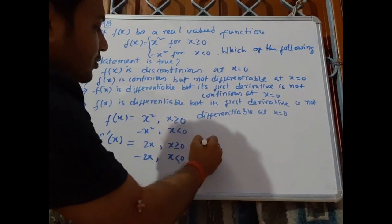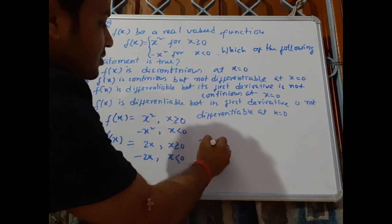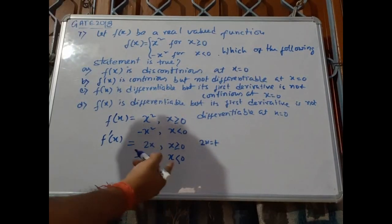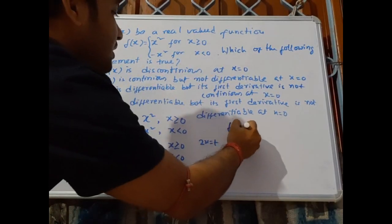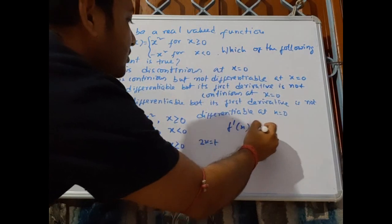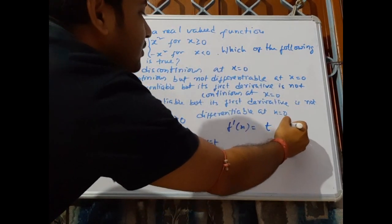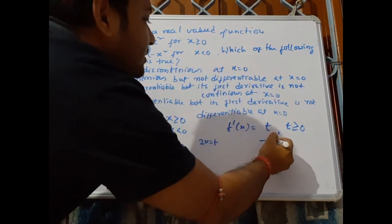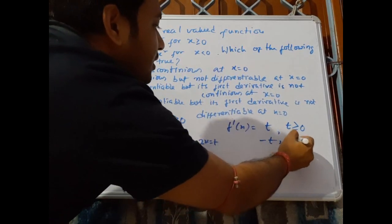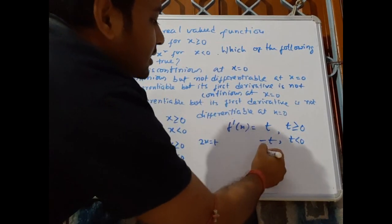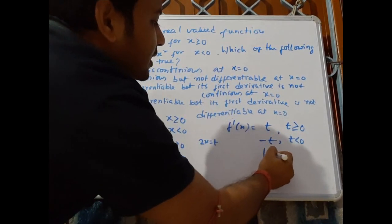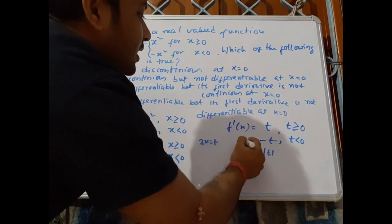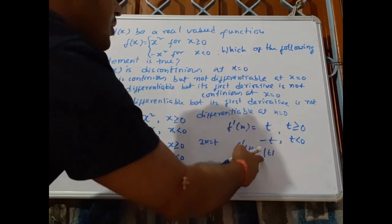If we take the substitution 2x equals t, then f'(x) equals t for t greater than or equal to 0, and minus t for t less than 0. So this is nothing but mod(t) — the first derivative f'(t) equals |t|.